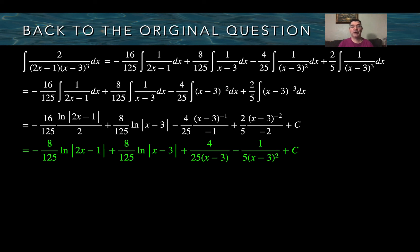If you took the derivative of this whole expression, you would get back to 2 over (2x minus 1) times (x minus 3) to the third. That is how you use integration by partial fractions. If you have any questions, please let me know, and I'll see you tomorrow.